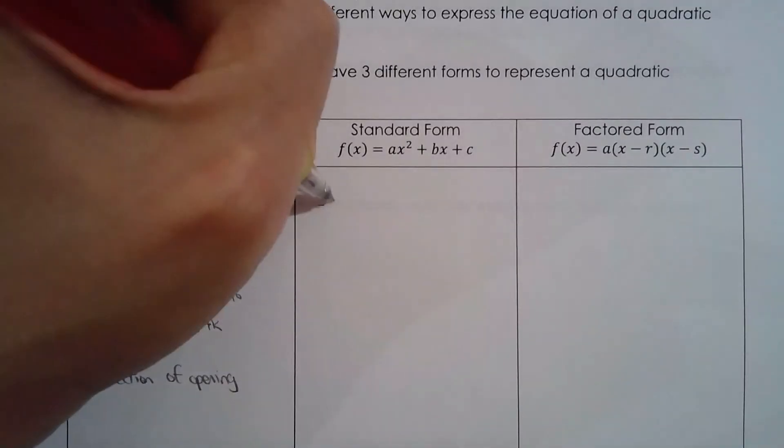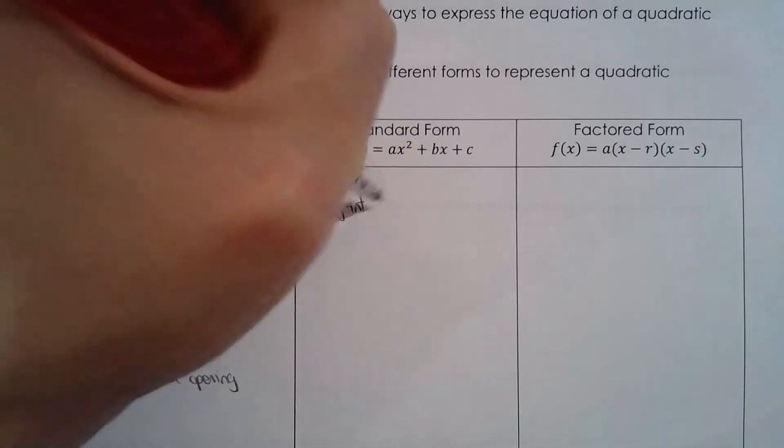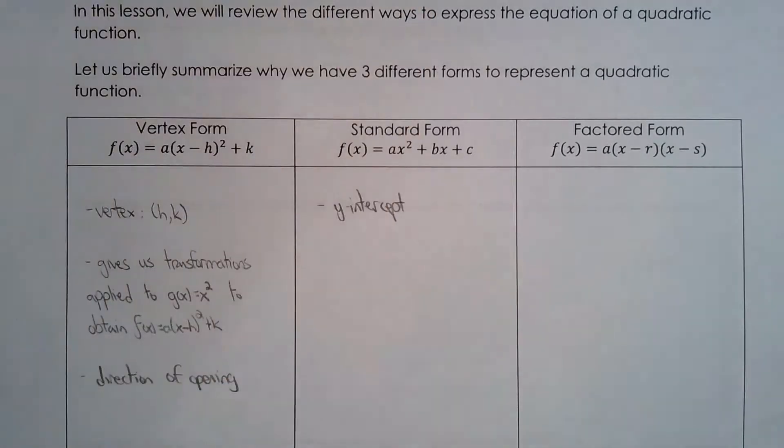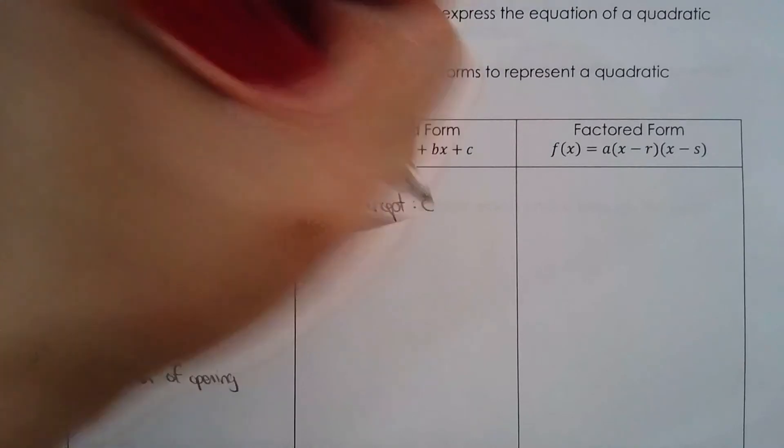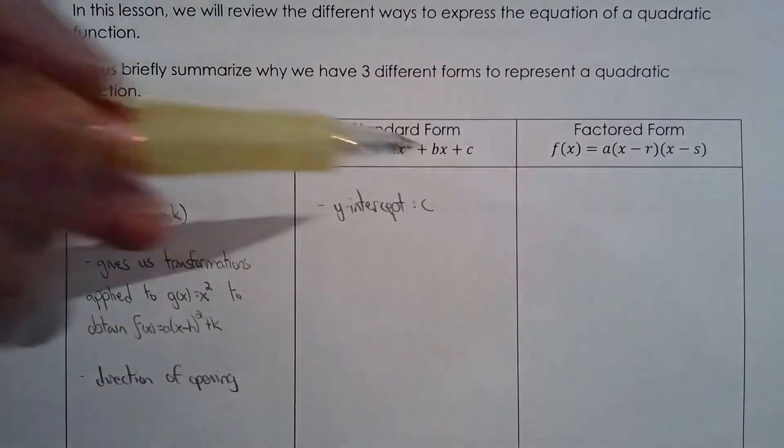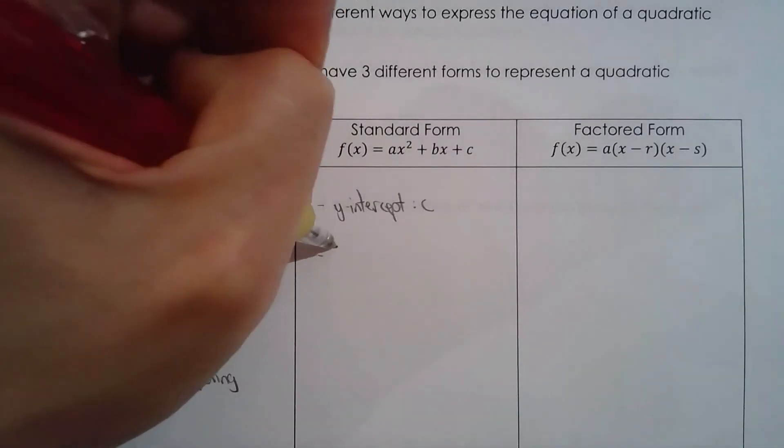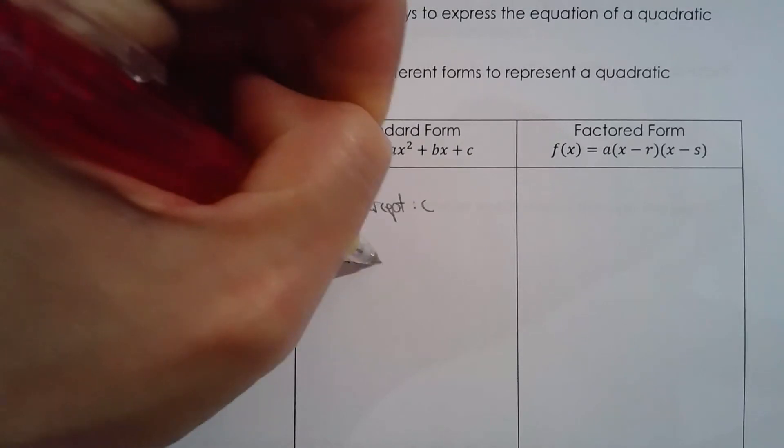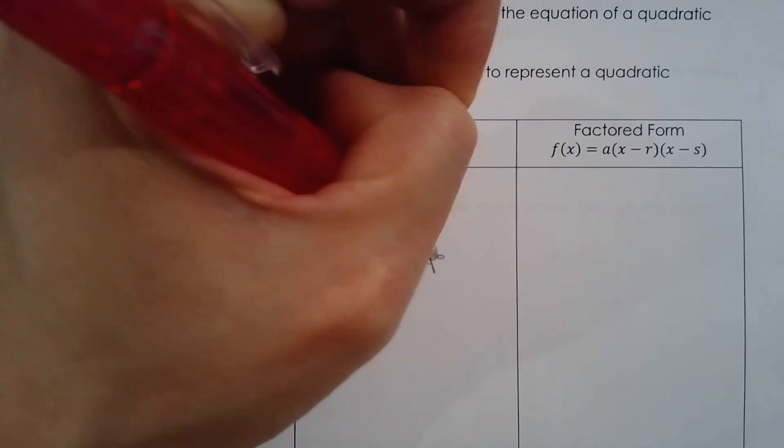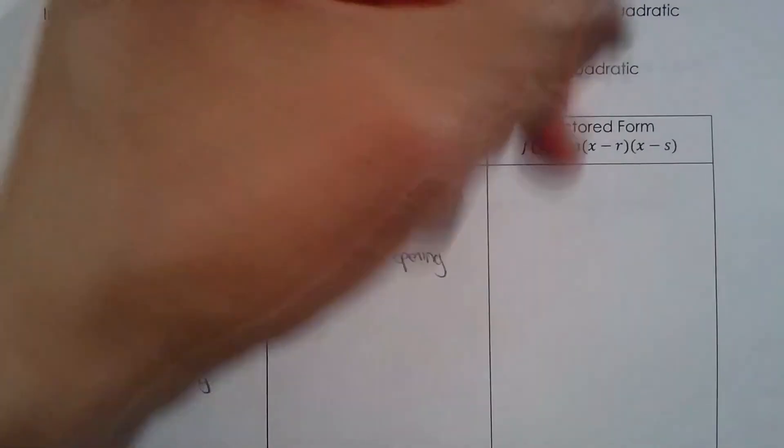Standard form, what does it really give you? The y-intercept, which unfortunately is not a very valuable piece of information, and you can easily find it even if you don't have it. So that is the reason why standard form I would argue is third place when it's ranked compared to vertex form and factored form. It also gives you direction of opening. All I have to see is whether a is positive or negative.